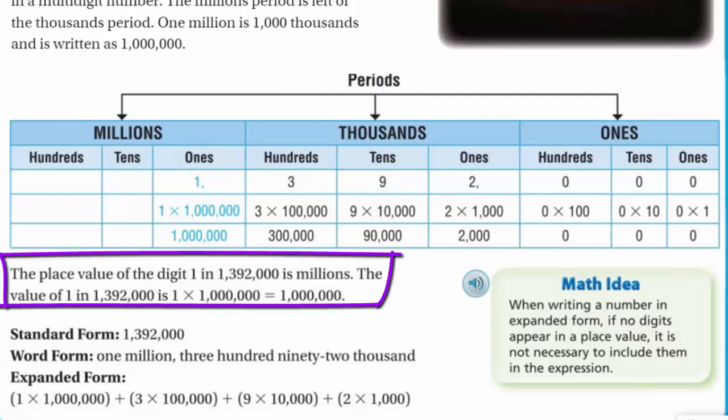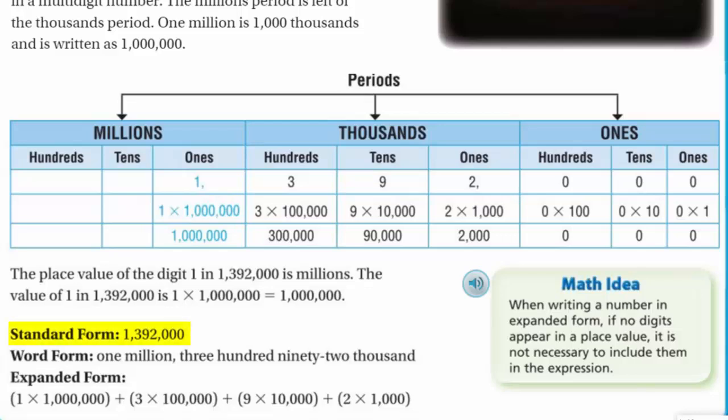Now, it does say the place value of the digit 1 in 1,392,000 is millions. The value of 1 in 1,392,000 is 1 times 1,000,000, which is equal to 1,000,000. And you can see the numbers displayed. Now, we have a standard form that shows how we normally write the number, which is the 1,392,000. That's the standard form. It's the form that we're going to write it.